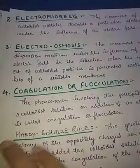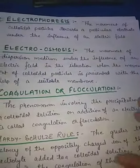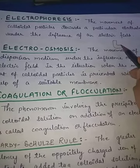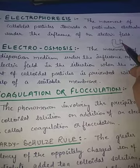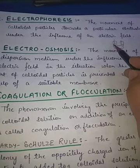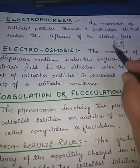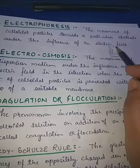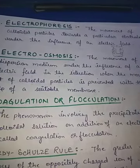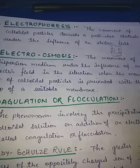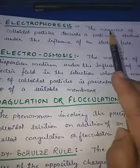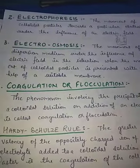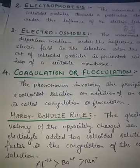The second electrical property is electrophoresis. Since colloidal particles carry either a positive or negative charge, if we place the colloidal solution in a tube with two electrodes connected to a battery, on switching on the circuit, the colloidal particles move toward the oppositely charged electrode. This movement tells us which type of charge the colloidal particles carry, and is also used to separate or collect colloidal particles from the dispersion medium.